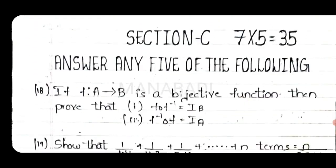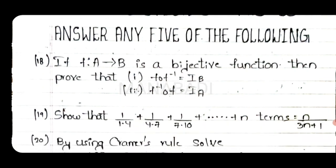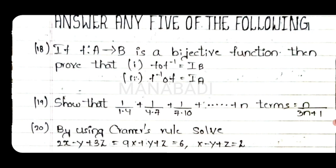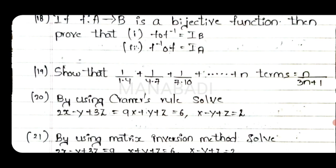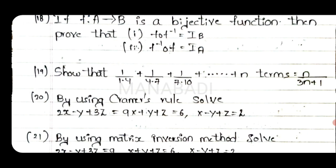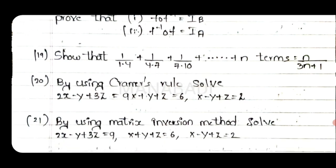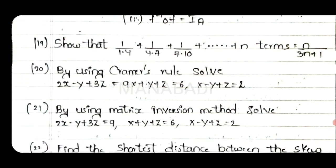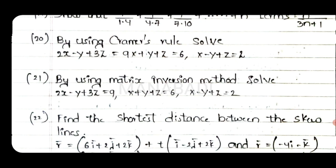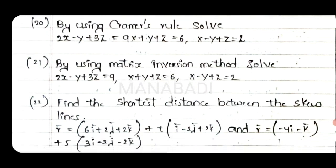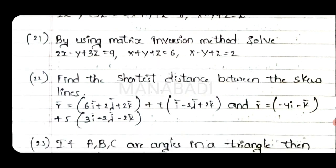Section C has 5 questions and each question has 5 marks; answer any five of the following. Eighteenth question: if f from A maps to B is a bijection, then prove that my functions. Next, nineteenth question: show that 1/(1.4) plus 1/(4.7) plus 1/(7.10) up to n terms equals n by 3n plus 1. Twentieth question: by Cramer's rule, prove the result. Twenty-first question: matrix inversion solution — I will show you the video on the channel.